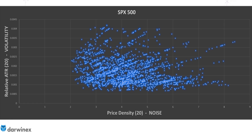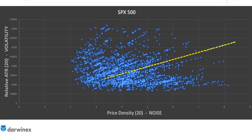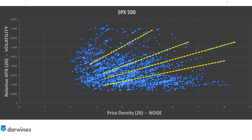Take a look at the chart — pause the video if you need to — because there's an important pattern here. If you look closely, you can actually see lines in the data. There's one here, another here, here, and here. And in actual fact, there are many more. This tells us a really important thing about how volatility and noise change over time.